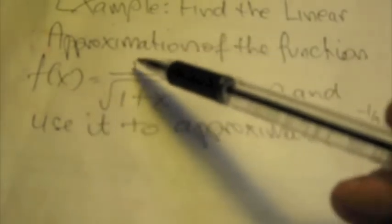Okay, in this example, we're asked to find the linear approximation of the function f(x) = 1/√(1+x) at a = 0 and use it to approximate 1.1^(-1/2).